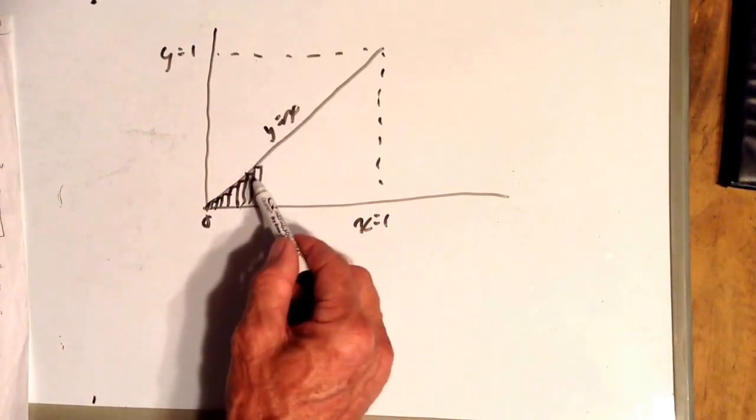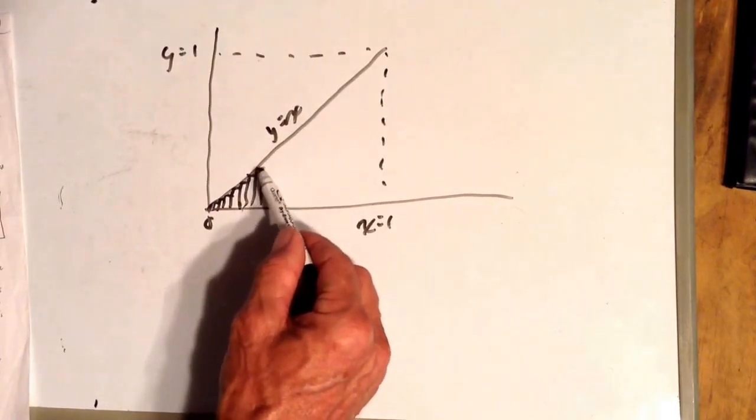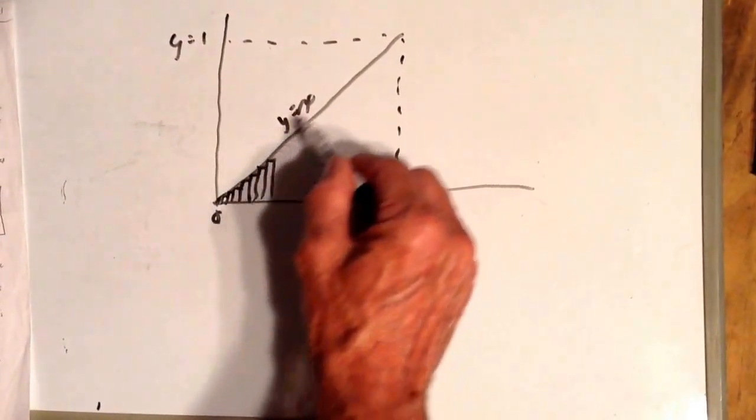Obviously the more rectangles we have, the closer their areas are going to be to the area of this triangle.